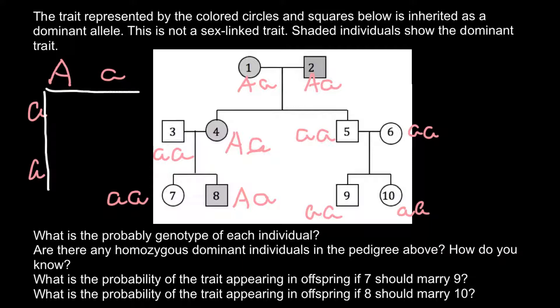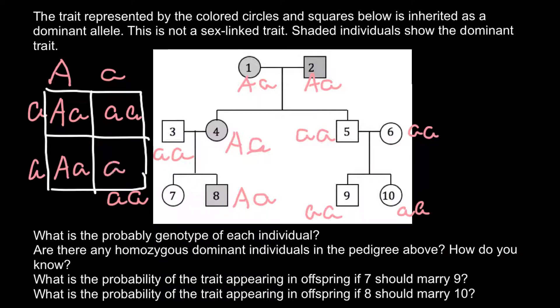We can say what is the probability for this couple to have an affected child. Regardless of the sex, because this is not a sex-linked genetic disorder. And as you see, according to this Punnett square, 50% of the progeny would be affected with this genetic disorder, and another 50% would be genotypically and phenotypically normal.